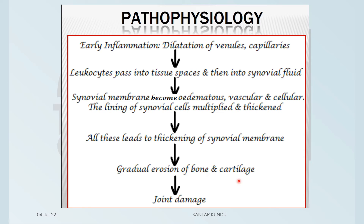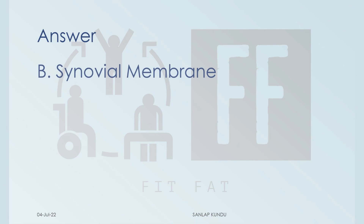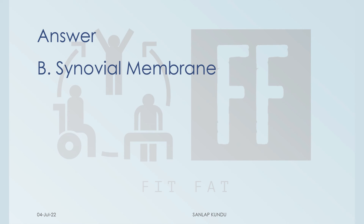Then there will be gradual erosion of bone and cartilage, and the ultimate result is joint damage. So the most involved structure in rheumatoid arthritis is the synovial membrane. Therefore, the answer to the question is Option B: synovial membrane.